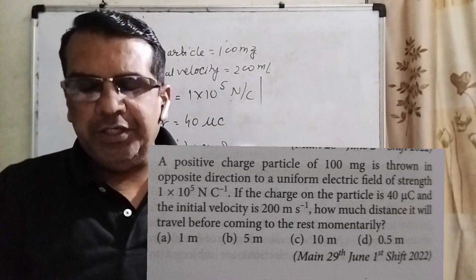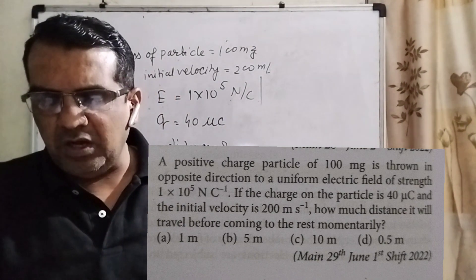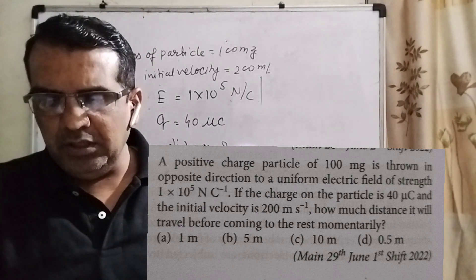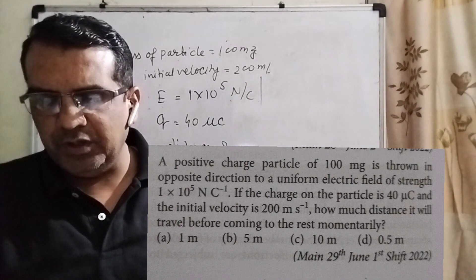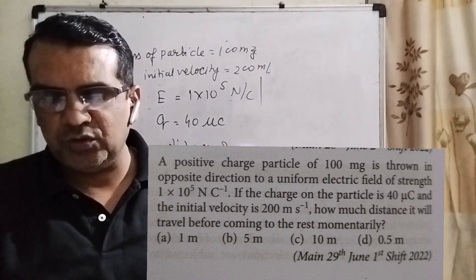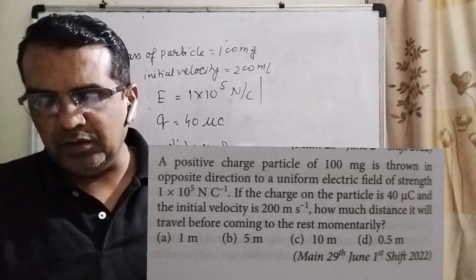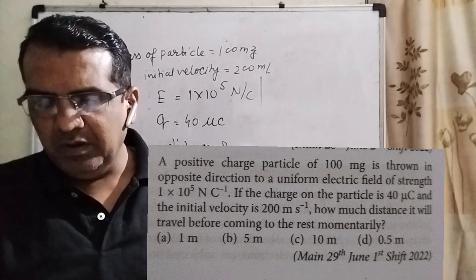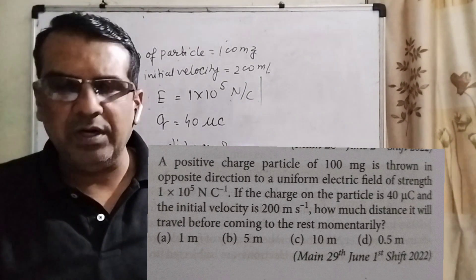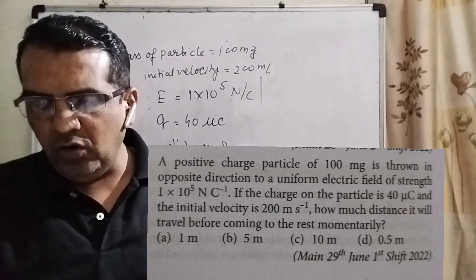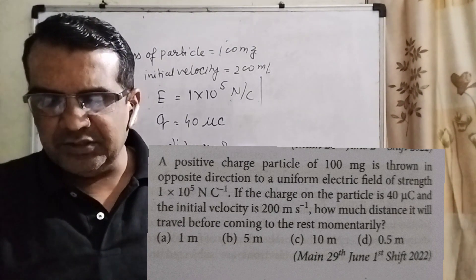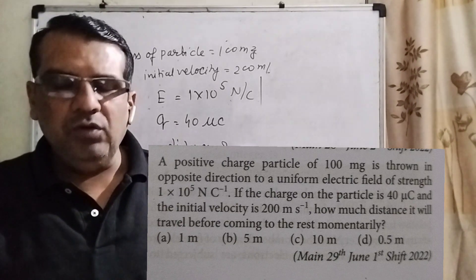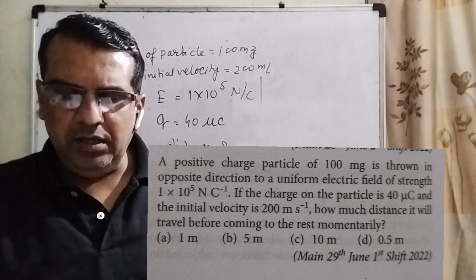Here the question is: a positive charge particle of 100 milligrams is thrown in opposite direction to a uniform electric field of strength 1×10^5 Newton per coulomb. If the charge on the particle is 40 micro coulomb and the initial velocity is 200 meter per second, how much distance will it travel before coming to rest momentarily? You have been given four options: A. 1 meter,